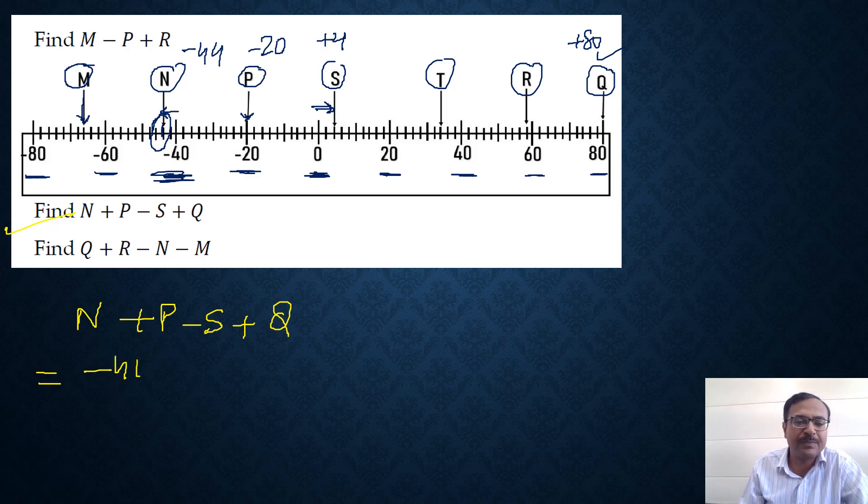Let us put the values. N is minus 44 plus P, which is minus 20 in brackets because two signs cannot come together without parenthesis. Minus S, S is plus 4, no need of a bracket. Plus Q, Q is 80.